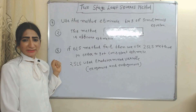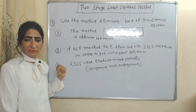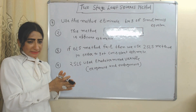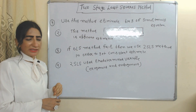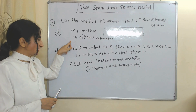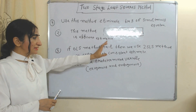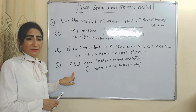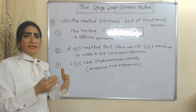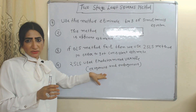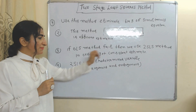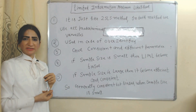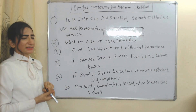Two-Stage Least Squares eliminates the bias of simultaneous equations — bias arises when we directly apply OLS. This method is an efficient estimator; if OLS fails, we apply 2SLS to get a consistent estimator. This method uses predetermined variables, which include both exogenous (independent) and lagged endogenous (dependent) variables.